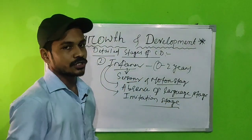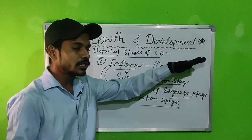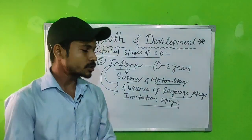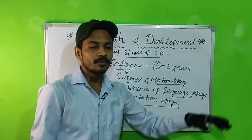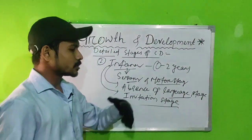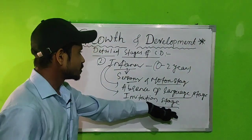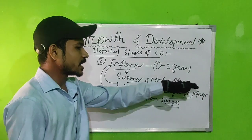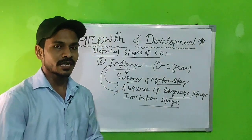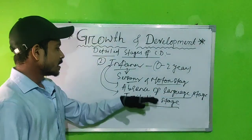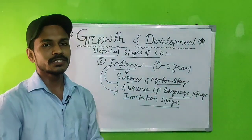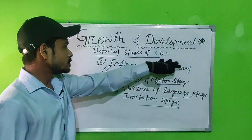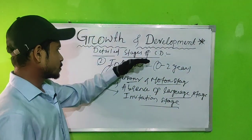The infancy stage is also called the imitation stage because the newly born child always imitates others, and through imitation is able to express their mental process, thoughts, and feelings. To summarize: infancy is zero to two years, called the sensory and motor stage by Jean Piaget, absence of language stage, and imitation stage.